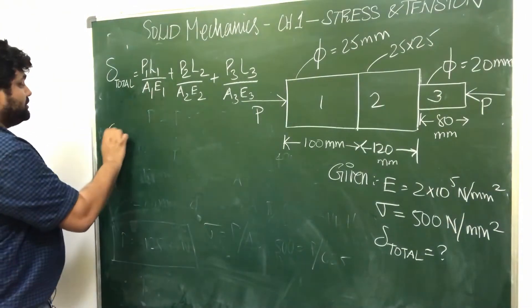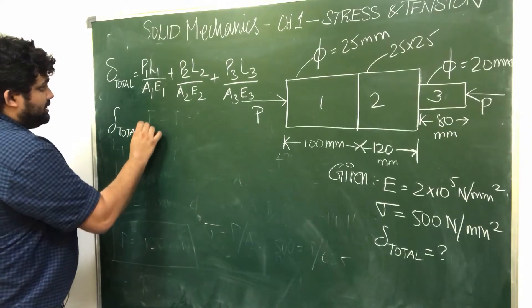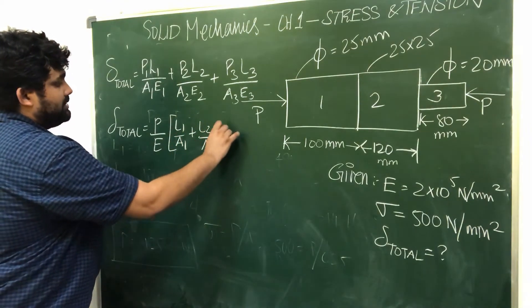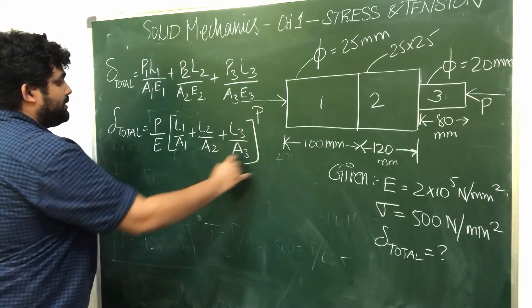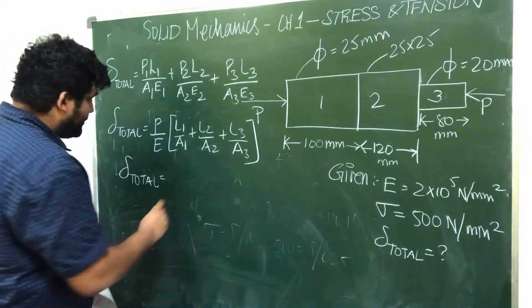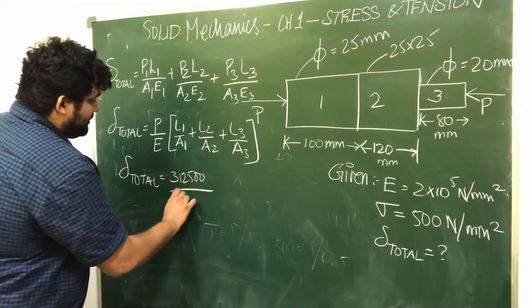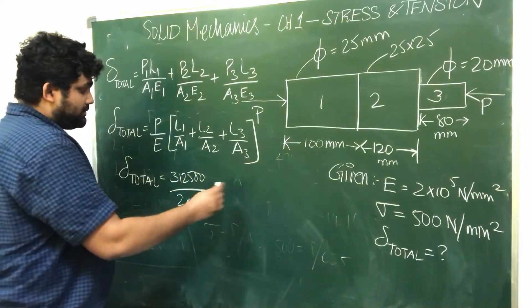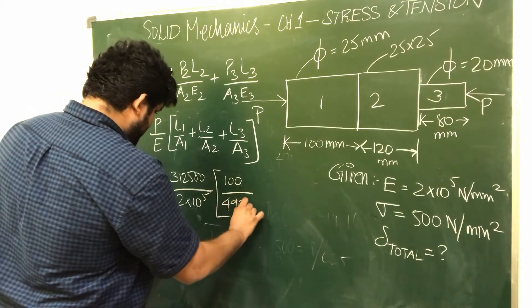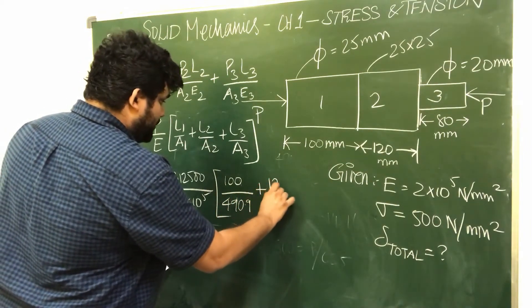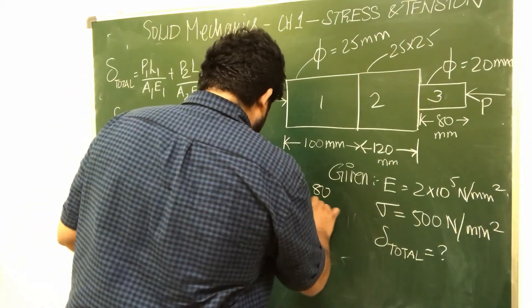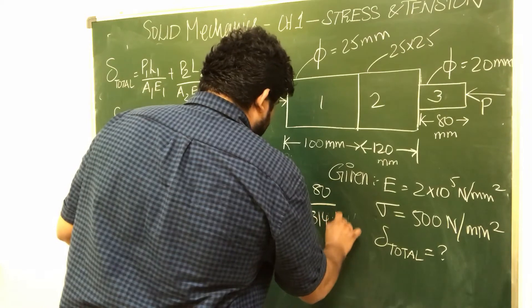So next, substitute into the total deflection formula. P is common, E is common, so total elongation is P/E times (L1/A1 + L2/A2 + L3/A3). So total elongation is 312,500 Newton divided by 2x10^5 N/mm^2 times (100 mm / 490.9 mm^2 + 120 mm / 625 mm^2 + 80 mm / 314.16 mm^2).